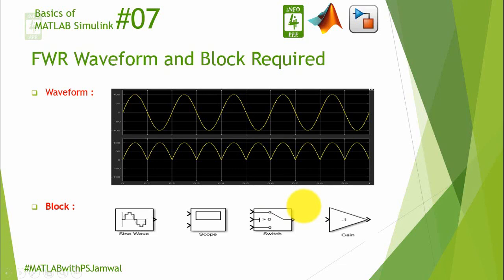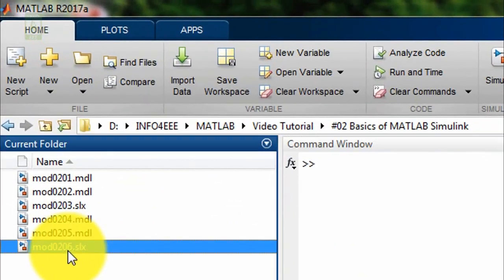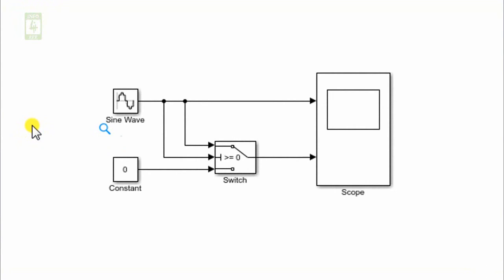Now moving towards the practical — three blocks out of four are the same as we used in our HWR waveform, so I am continuing the simulation we created in the 6th lecture. The only difference in FWR waveform is that HWR waveform consists of zero value in the negative cycle, while the FWR waveform consists of the complement of the sinusoidal supply in the negative cycle.